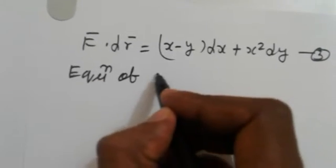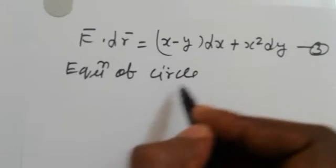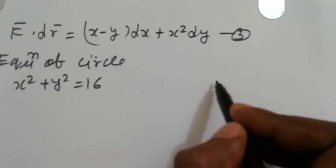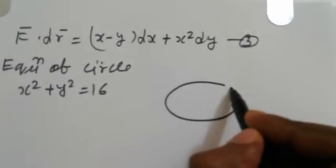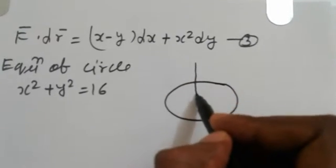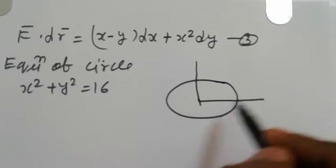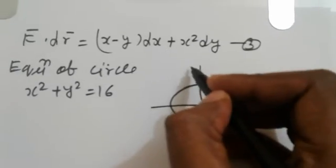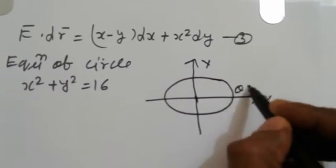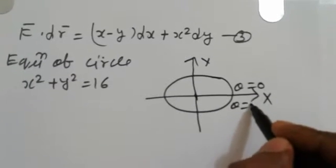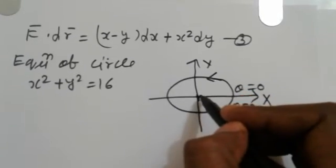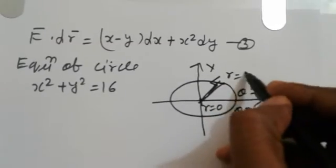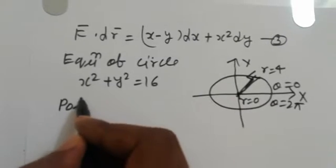The equation of the boundary circle is x² + y² = 16. In the new region, the x-axis and y-axis are defined with θ going from 0 to 2π in the clockwise direction, and r going from 0 to 4. We write this in polar form.